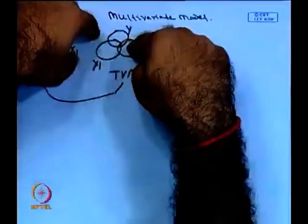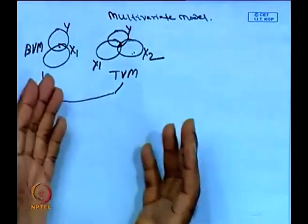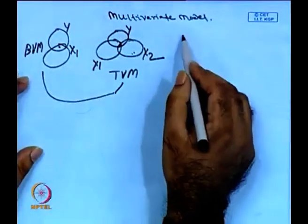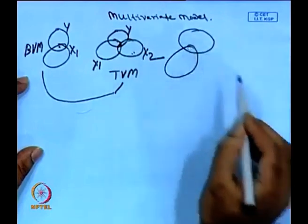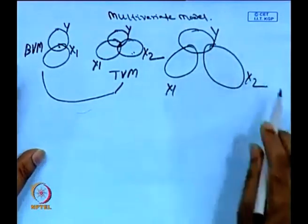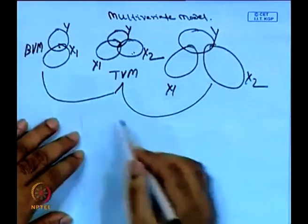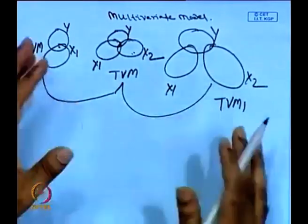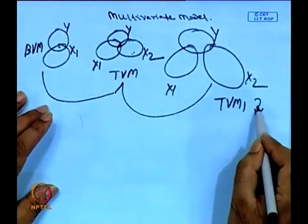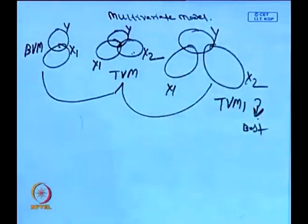Let me give an example. Suppose we have Y and X1. I will create another variable X2. This is one problem and that is another problem — both are trivariate models. But between these two, one is considered the best model because, by external outlook, you can make a guess that one will probably be best fitted. The reason is that the additional problem from the trivariate model is the multicollinearity issue, which is not clearly visible in one of them.